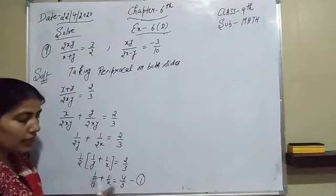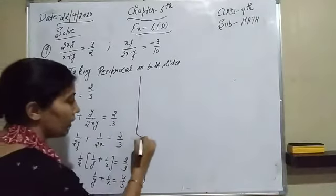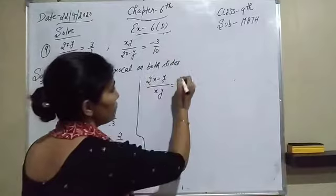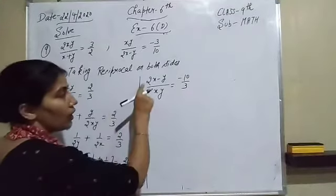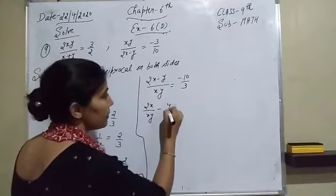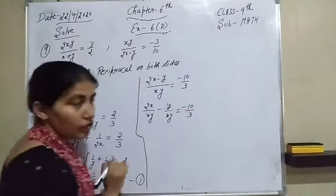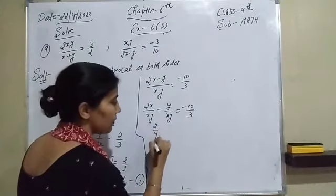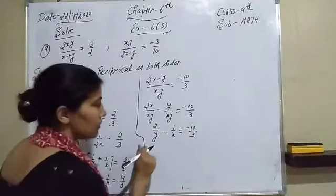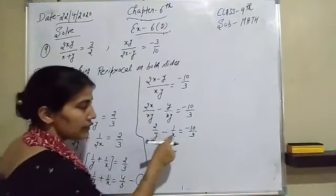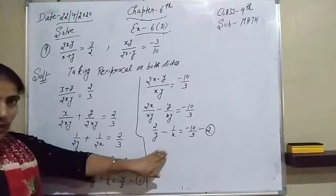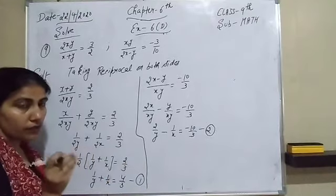Now for the second equation, taking its reciprocal gives: (2x−y)/(xy) equals −10/3. Dividing the numerator separately: 2x/(xy) minus y/(xy) equals −10/3. Simplifying: 2/y minus 1/x equals −10/3. That is our second equation. Now we have two equations in 1/y and 1/x, which we've solved many times before.